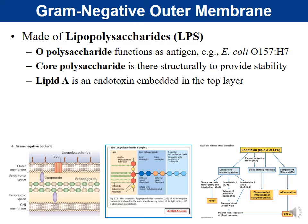Looking at a larger diagram of the LPS: the parts are the O-polysaccharide at the top, which is the antigen — it allows recognition and determination of a particular type of bacteria, useful for distinguishing between different species.